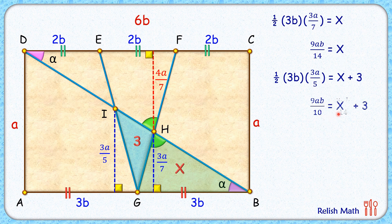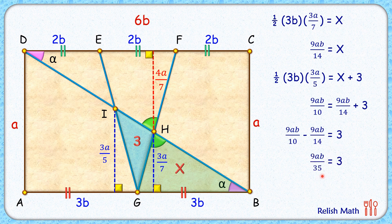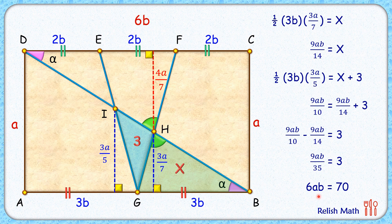Substituting the value of x: 9ab/10 = 9ab/14 + 3. Taking 9ab/14 to the left side and simplifying gives 9ab/35 = 3, so 3ab = 35 cm². Multiplying by 2: 6ab = 70. Since the length of the rectangle is 6b and the width is a, the area of the rectangle is 6ab, which equals 70 square centimeters.